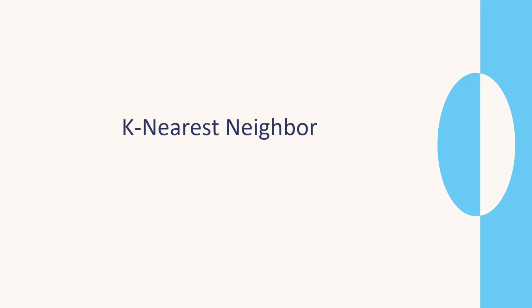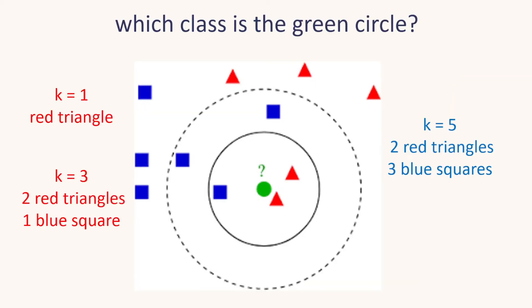We start classification with k-nearest neighbour. Here we want to know if a green circle belongs to the red triangle class or the blue squares class. With k=1, the nearest neighbour is a red triangle, so the green circle joins that class. With k=3, we get two red triangles and one blue square — still red triangle. With k=5, we get two red triangles and three blue squares, so the majority is blue squares — a different class. We always use an odd number for k.